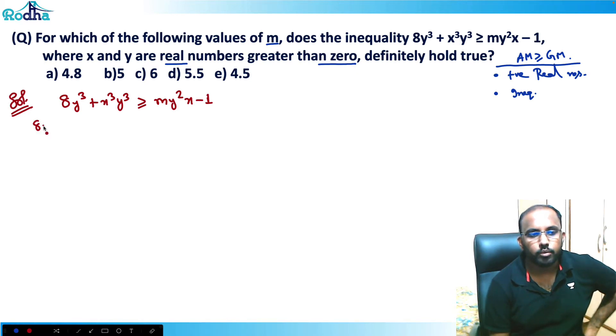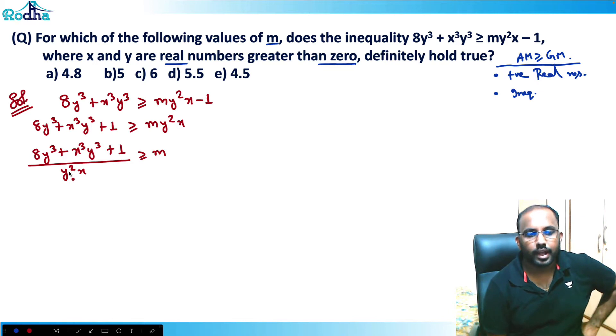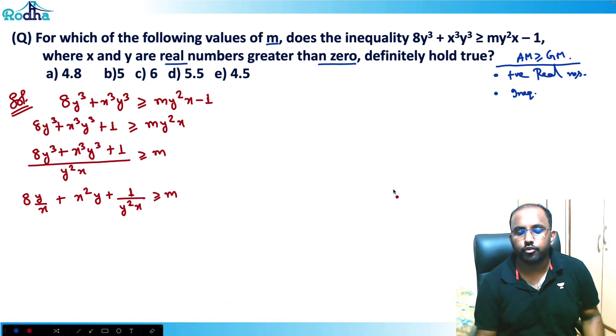So I can write here that 8y³ + x³y³ + 1 is greater than equal to my²x. Now I can write 8y³ + x³y³ + 1 divided by y²x is greater than equal to m. Now I can just cancel all these common values here. So 8y³ by y²x will be equal to 8y/x + x²y + 1/y²x is greater than equal to m. So you have solved this now.